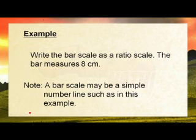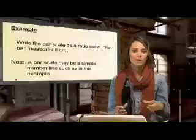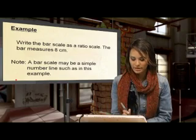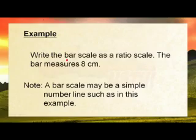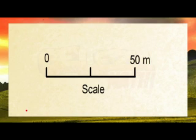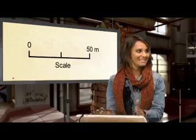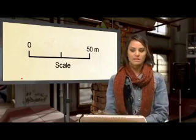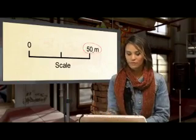Let's look at an example. Write the bar scale as a ratio scale. The bar measures 8 centimeters. A bar scale may be a simple number line, such as in this example. So if you get a test paper, measure your scales. In this question, they give us the bar scale as a ratio scale, and the bar measures 8 centimeters. So we know that this bar over here measures 8 centimeters, and 8 centimeters is equal to 50 meters.